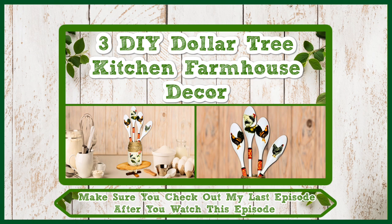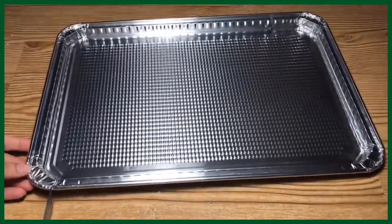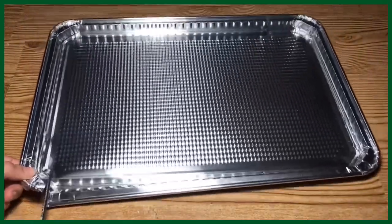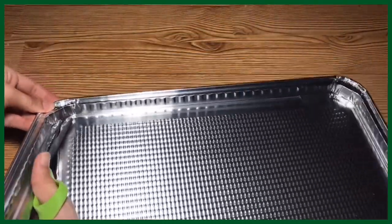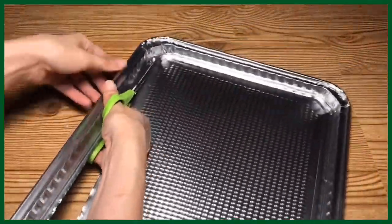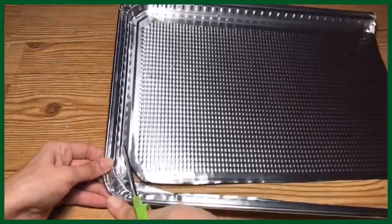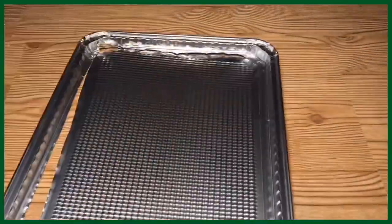Make sure you check out my last episode after you watch this episode. I'm going to start off by taking this baking sheet that I got from Dollar Tree and using some sharp scissors, I'm just going to cut the edges off. Be careful when you do this because it can get rather sharp once you get the edges cut.